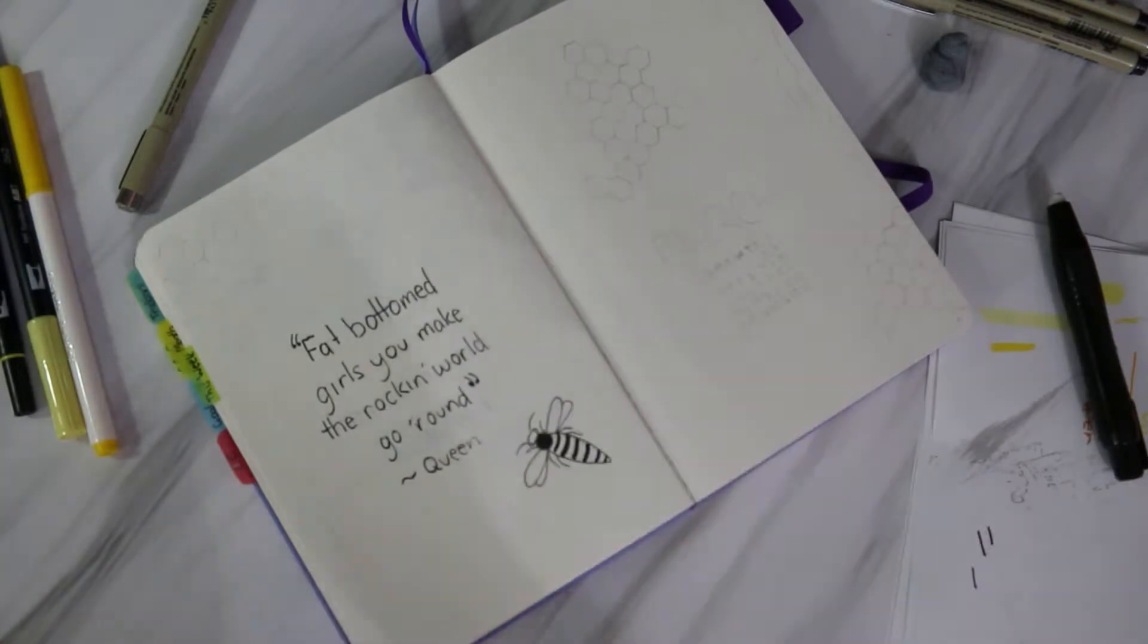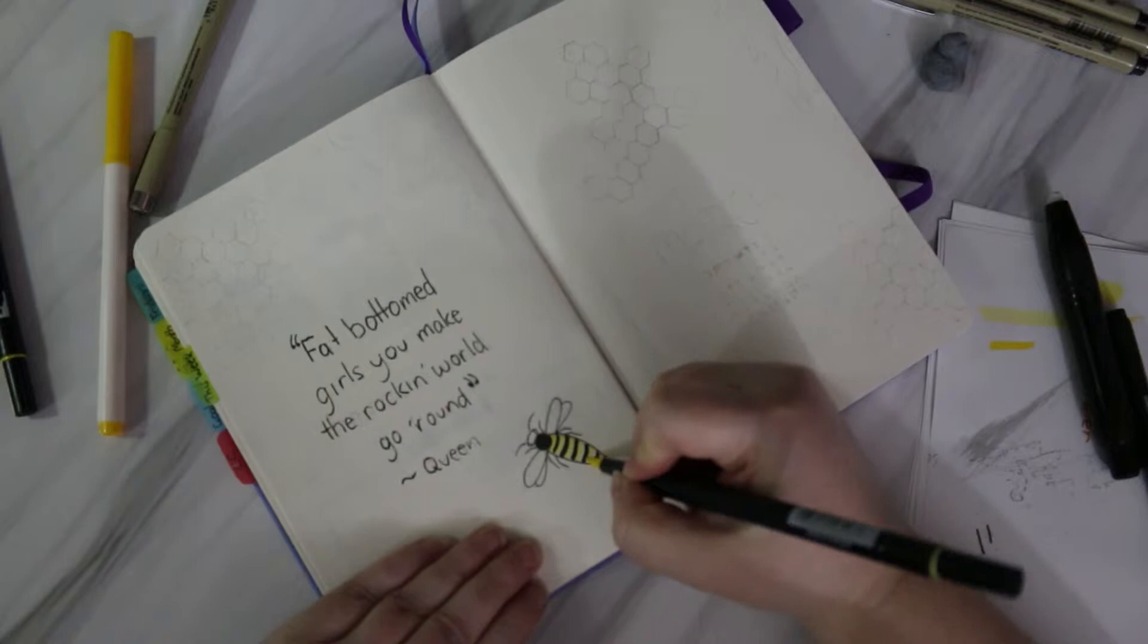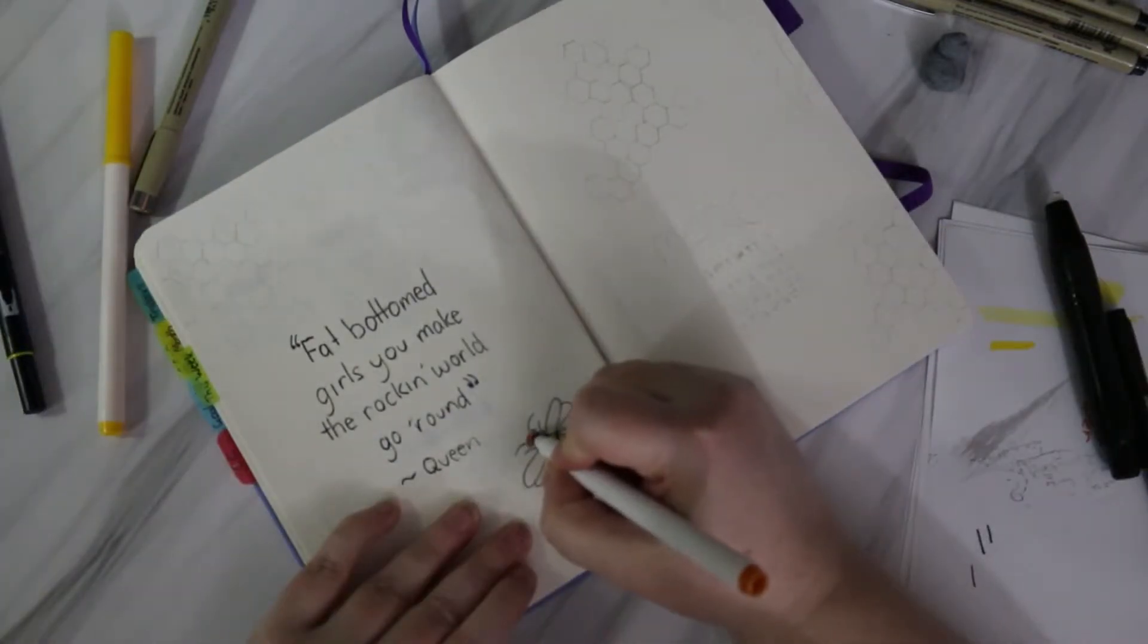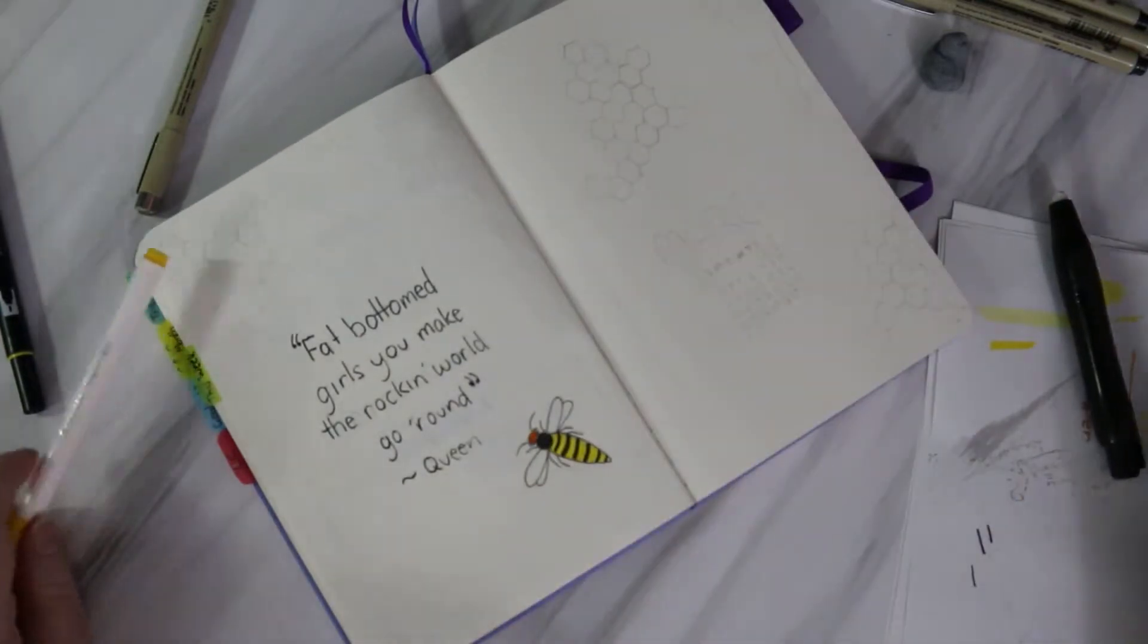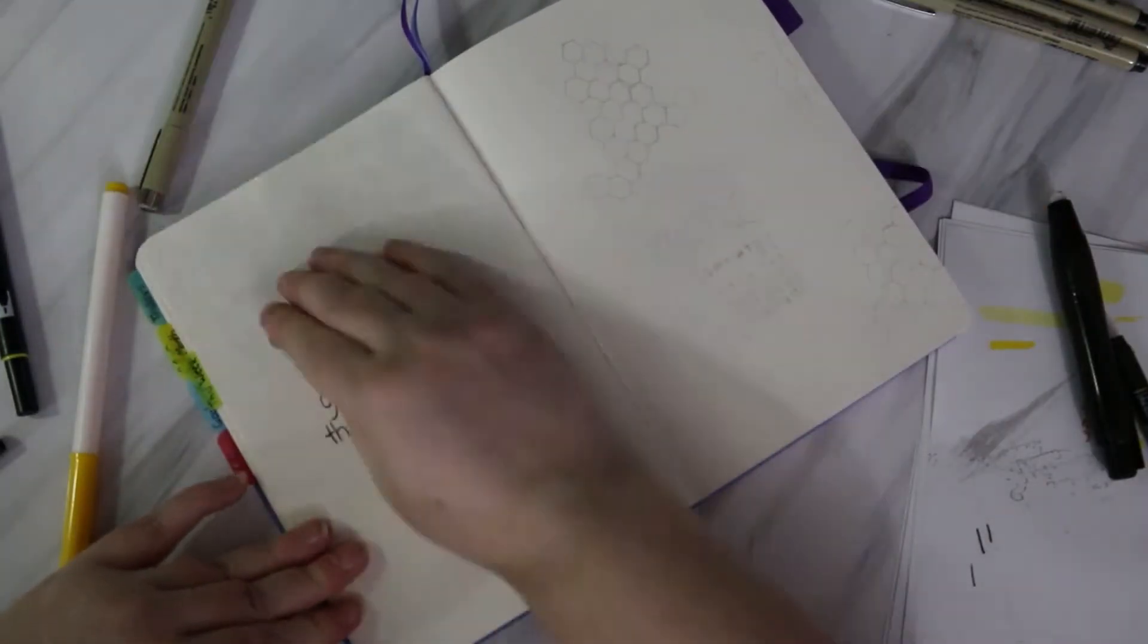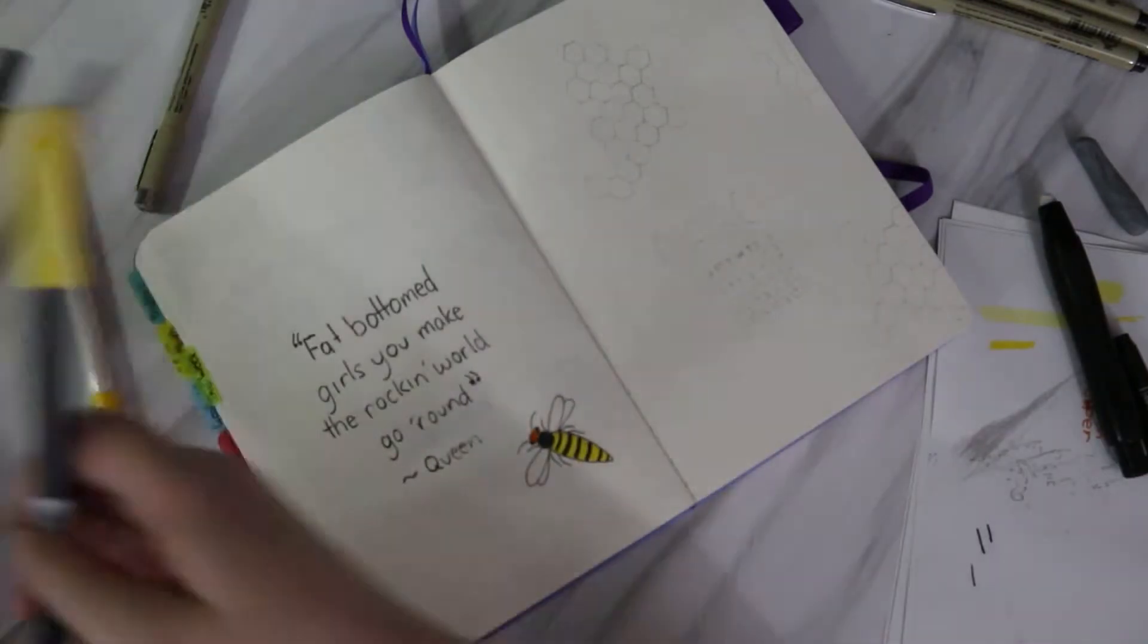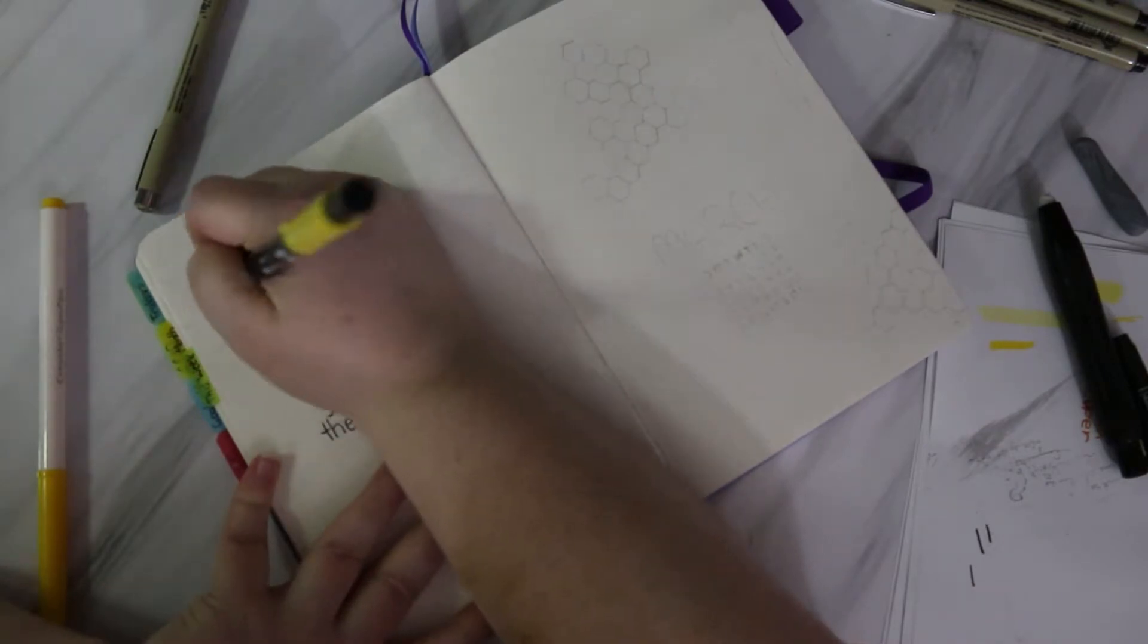There's this one guy I watch, and every time he finds the queen, I have the Queen song 'Fat Bottom Girls' running through my head because the queens have a much larger back end. So I wrote out a bit of the chorus from the Queen song.